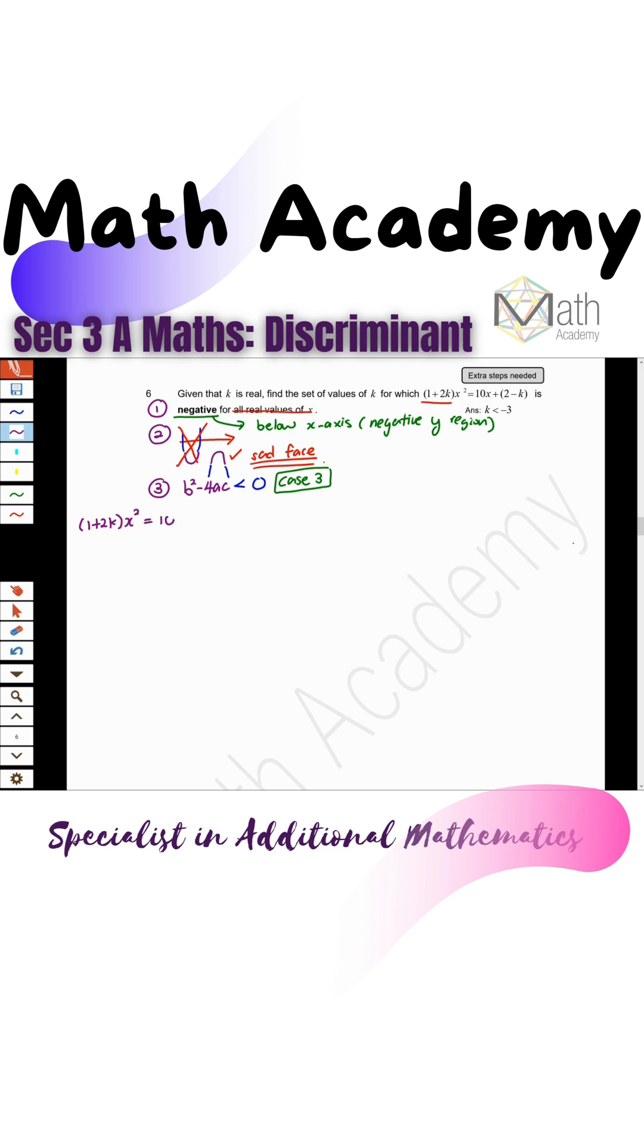We're going to get the abc first. You can see right now that your right-hand side is not zero, so you cannot get the abc right now. You're going to shift all the terms to the left-hand side first.